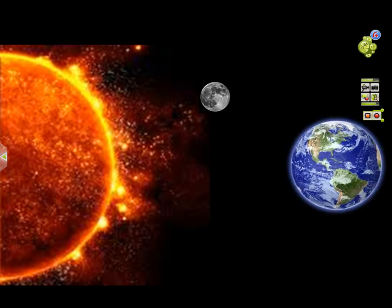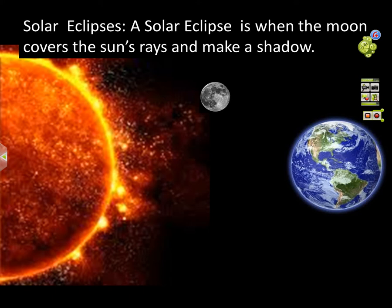So what kind of eclipse is this? That's a solar eclipse. It's where the moon covers the sun and it makes a shadow. Well, this one's really good too. Watch.